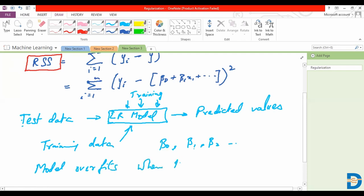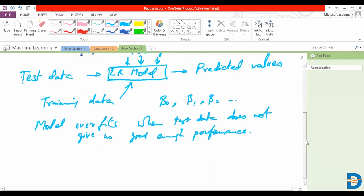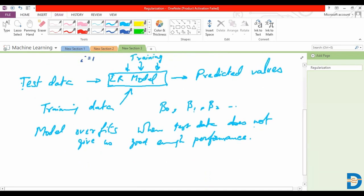When test data does not give us a good enough performance, we do have a pretty decent performance based on the training data, the model having learned from the training data itself, but the test data doesn't quite match that level of performance. That's when we talk about overfitting occurring as a phenomenon.